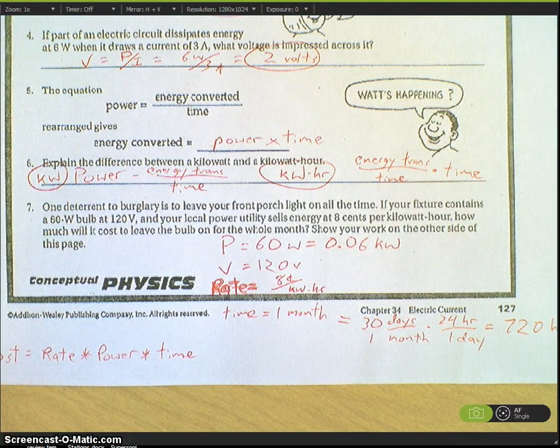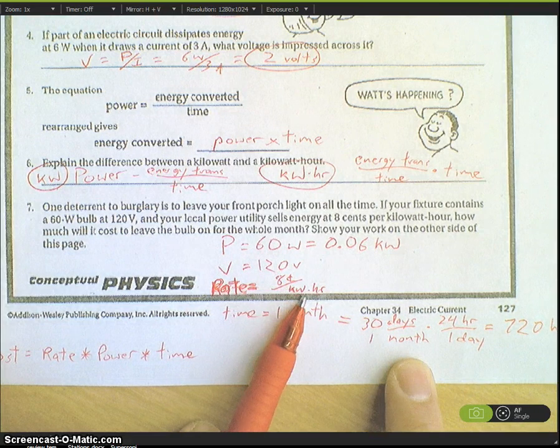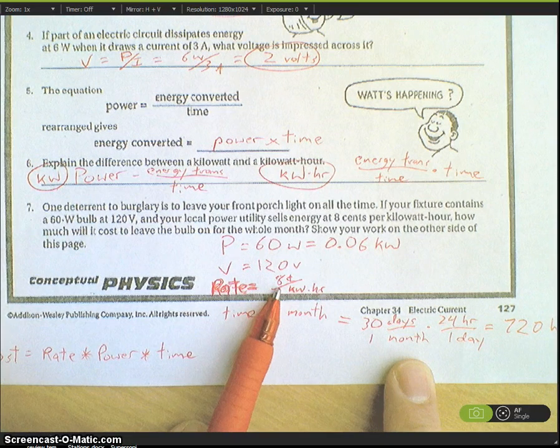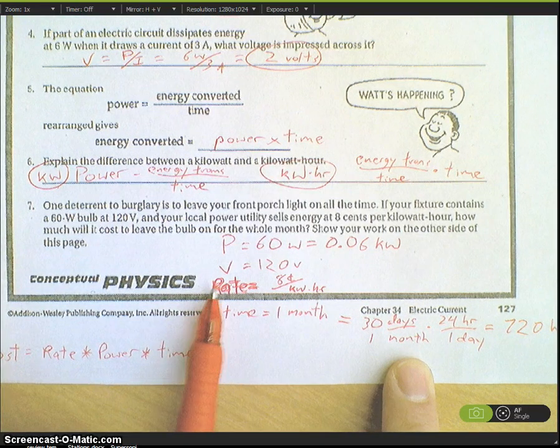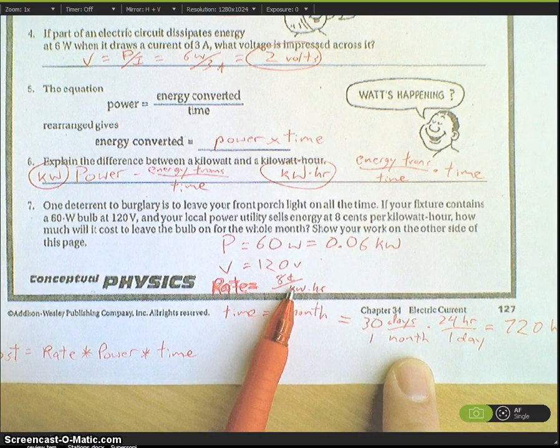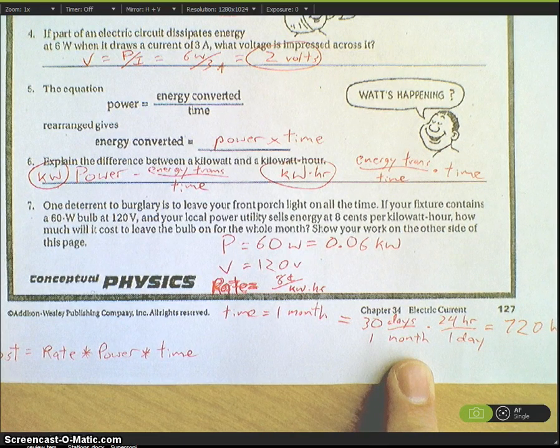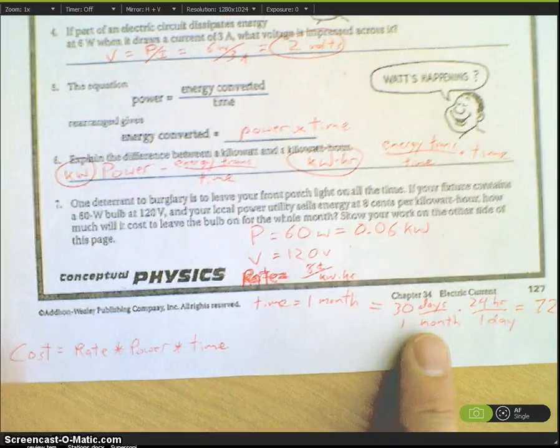I need to create a situation where I'm canceling out the units. If I have 8 cents per kilowatt hour, I'm looking for the cost but I need to get rid of the kilowatt and the hour to just have pure cost. So I'm multiplying this rate times the total kilowatts and by the total hours.